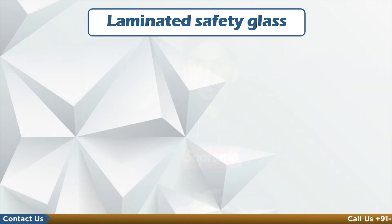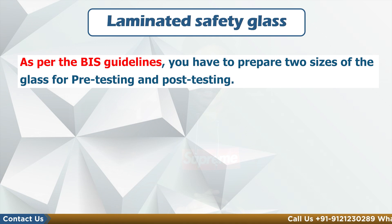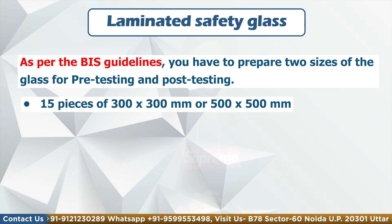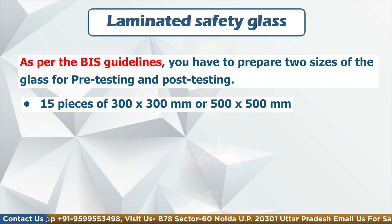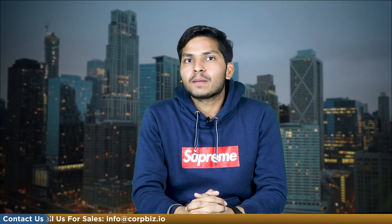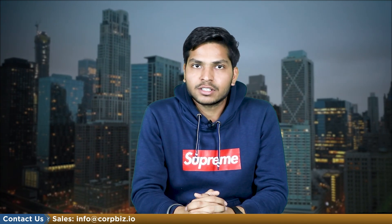For laminated safety glass, as per BIS guidelines, you have to prepare three sizes for pre-testing and post-testing: 15 pieces of 300x300 mm or 500x500 mm depending on your fracture and adjacent test arrangement, six pieces of 1938x876 mm, and five pieces of actual size. I hope this video is beneficial for all of you. Please like and subscribe to the channel. Thank you.